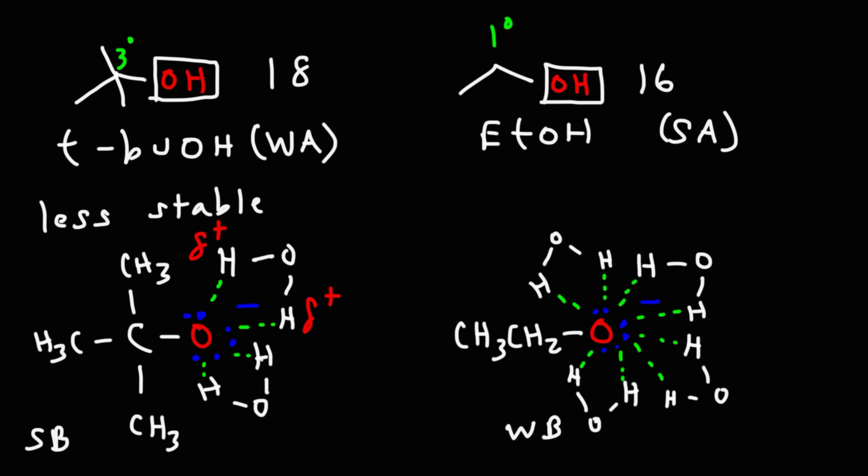So that's why ethanol is a stronger acid than tert-butanol. It's because its conjugate base is weaker and it's more stabilized or better stabilized by the increased solvent interactions that it can form due to the fact that it's not sterically hindered as tert-butoxide.